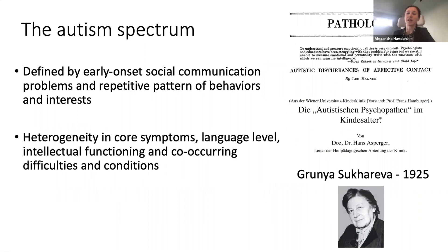Kanner defined autism in 1943 with detailed case descriptions of children showing social aloofness, communication impairments, and stereotyped behaviors and interests, often accompanied by intellectual disability. A year later, Asperger independently published an article on children presenting marked difficulties in social communication and repetitive behavior patterns, despite having advanced intellectual and language skills. It was only three decades later that Wing and Gold united Asperger and Kanner's descriptions and conceptualized a spectrum of autistic conditions.